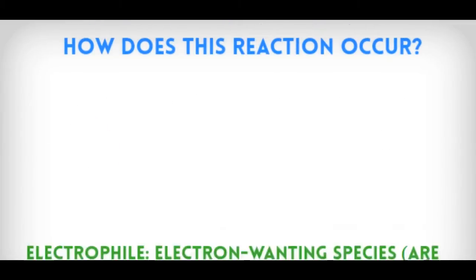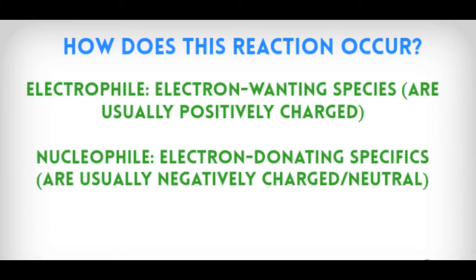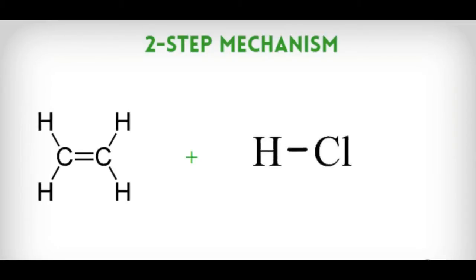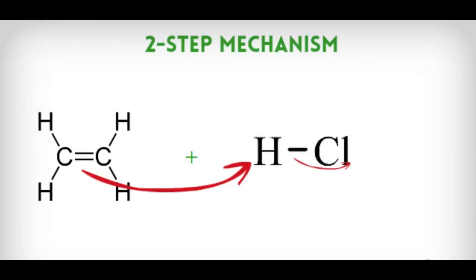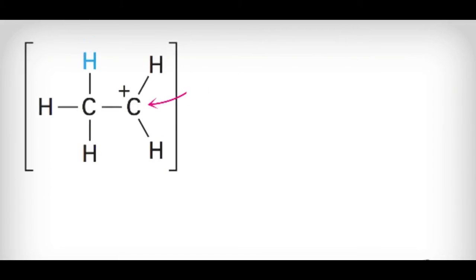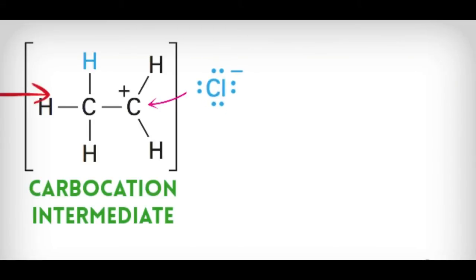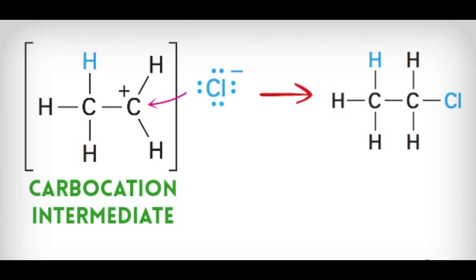Now, how does this reaction occur? Understanding is very critical, so we need some definitions. Electrophiles are electron-loving species — they are positively charged and want electrons. Nucleophiles are electron-donating species; they usually have a lone pair of electrons, are negatively charged or neutral, and want to give up electrons. These reactions are called electrophilic addition reactions. The addition of HX is an electrophilic addition reaction because the rate-determining step involves addition of an electrophile — in this case, hydrogen. First, the lone pair of electrons in the carbon pi bond attacks the hydrogen, and the lone pair of electrons is forced onto the chlorine. This forms a carbocation intermediate, because that carbon lost electrons. Then the chlorine attacks via a positive-negative interaction, and the chlorine molecule is added onto that carbon.